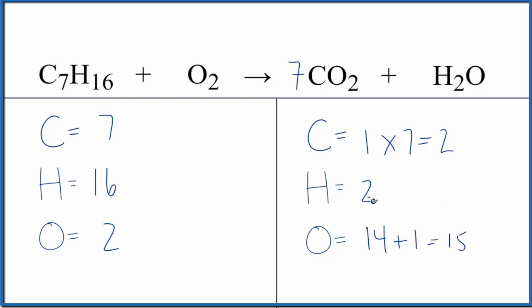All right, let's do the hydrogens. Eight is our coefficient, two times eight. That's 16. Let's update the oxygens. We have two times seven, that's 14, plus one times eight. That's eight. That's 22 oxygen atoms.